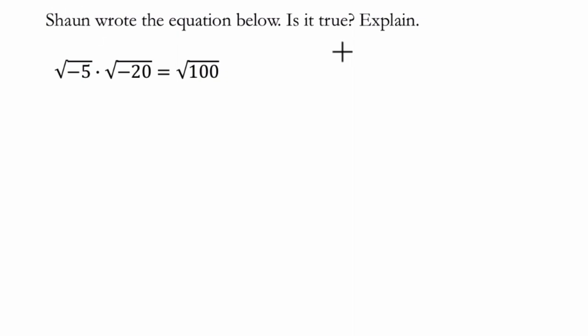Alright, so Sean wrote the equation below, is it true? Explain. Okay, so what does this equation say? It says the square root of negative 5 times the square root of negative 20 equals the square root of 100.